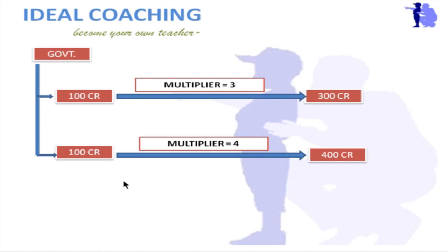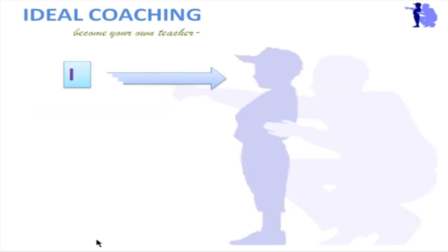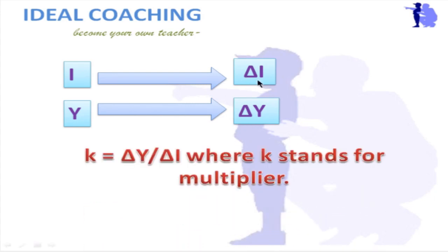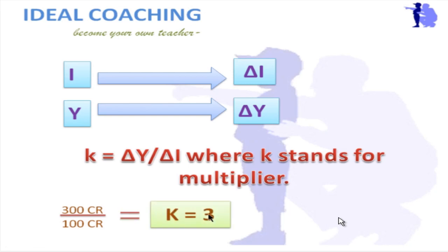Now if the government did an investment — suppose the investment is ΔI (earlier it was I, and now it has increased by ΔI) — and the income of people, earlier Y, has now increased by ΔY, then the multiplier K equals ΔY divided by ΔI. Change in income upon change in investment is known as the multiplier. In terms of formula: if government injects 100 crores and it turns into 300 crores, then K = 300/100 = 3, meaning income is increased three times.